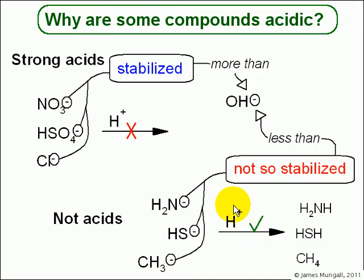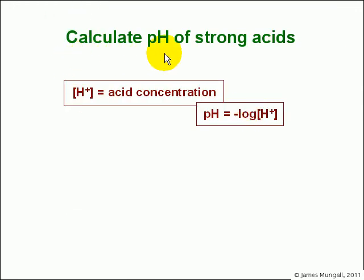We then asked why are some compounds acidic, why does this happen, and it happens because you have the A minus part, that anion is stabilised, that negative charge is stabilised, more than the OH minus is stabilised. And then finally we did the calculation of the pH of strong acids, where we say the H plus concentration is the acid concentration, and pH is minus log of that H plus concentration, so that's a quite straightforward calculation.